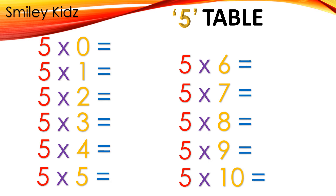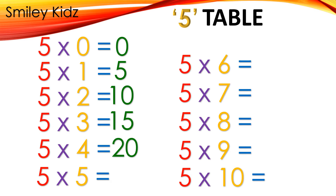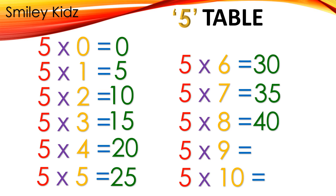Table 5: 5×0=0, 5×1=5, 5×2=10, 5×3=15, 5×4=20, 5×5=25, 5×6=30, 5×7=35, 5×8=40, 5×9=45, 5×10=50.